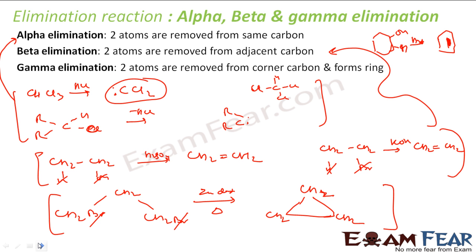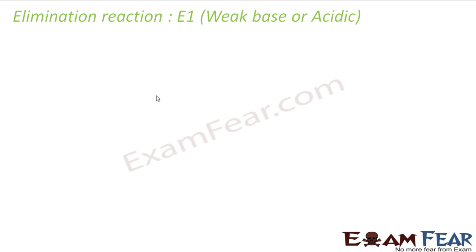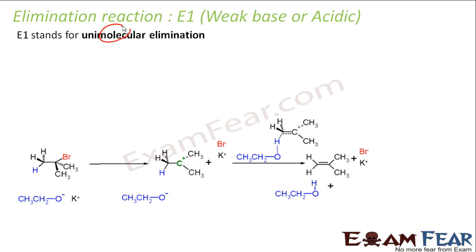So the classification is based on whether atoms are removed from the same carbon (alpha), adjacent carbons (beta), or corner carbons to form a ring (gamma). We also classify elimination reactions into E1 and E2 based on the rate-determining step, similar to SN1 and SN2. If the rate-determining step involves one species, it is E1; if two, it is E2.